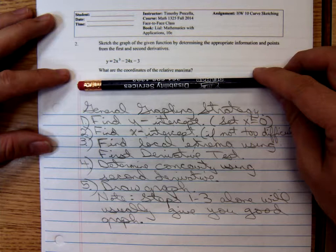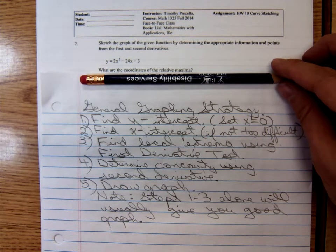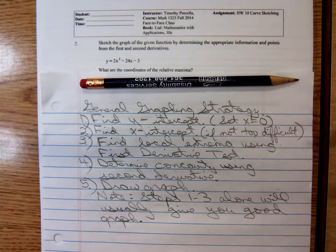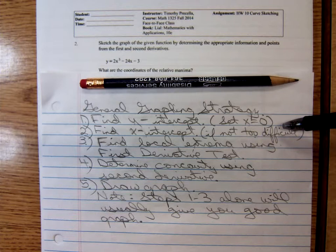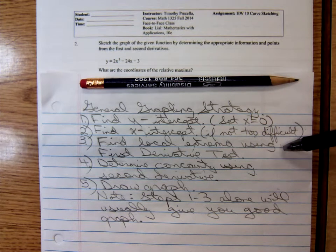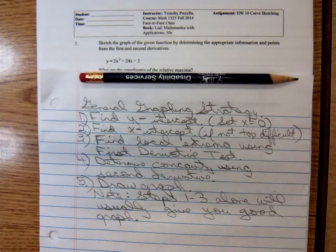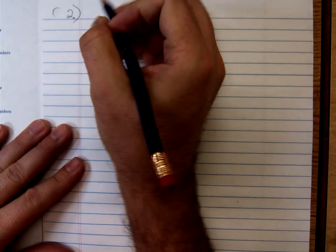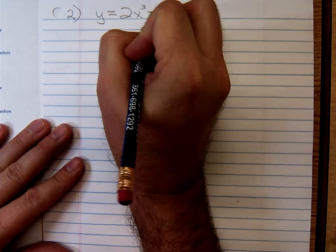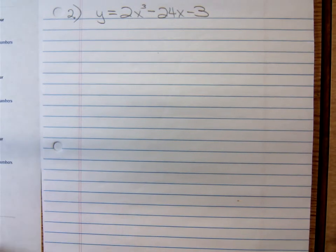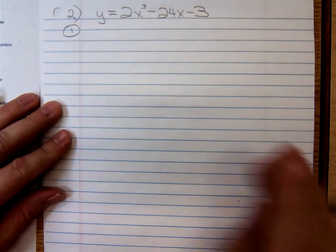Hi, I'm Timothy Priscilla and today we're graphing a third degree trinomial with my Math 1325 class. We're using the general graphing strategy that we developed in this course. First of all, find the y-intercept, that's easy enough plugging in zero for x. Then we'll find any x-intercepts if it's not too involved. Then we'll determine local extrema, determine concavity, and draw the graph.